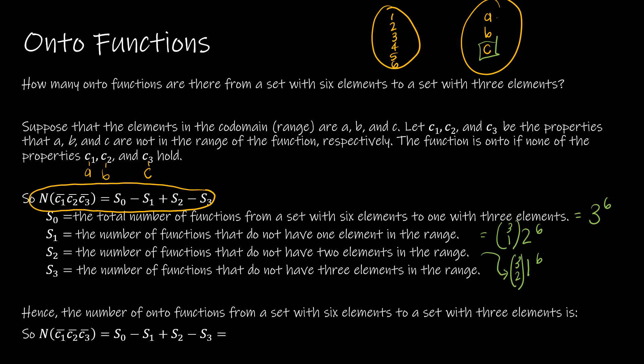So it would be like A and B aren't mapped to, so C is. A and C aren't mapped to, so B is. B and C aren't mapped to, so A is. You get the idea.